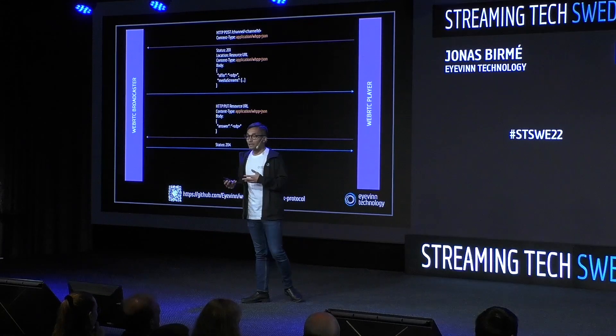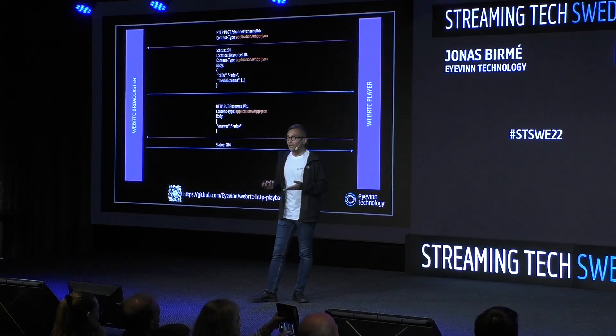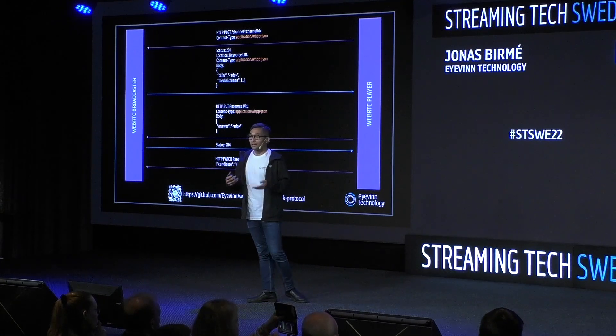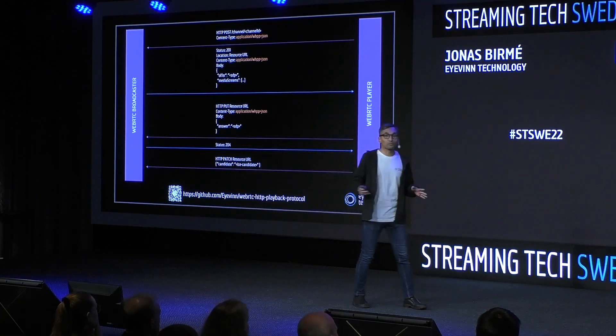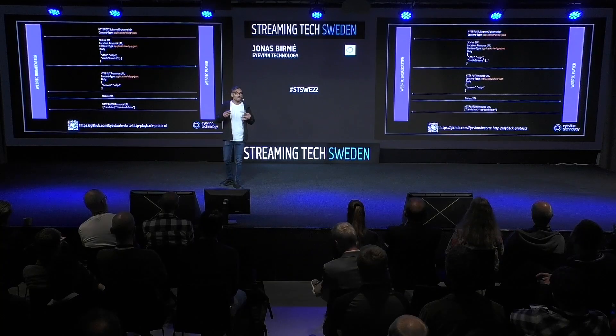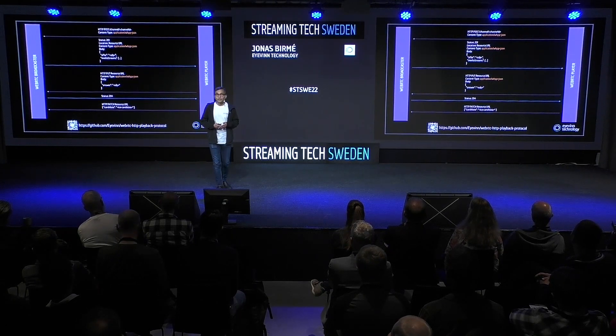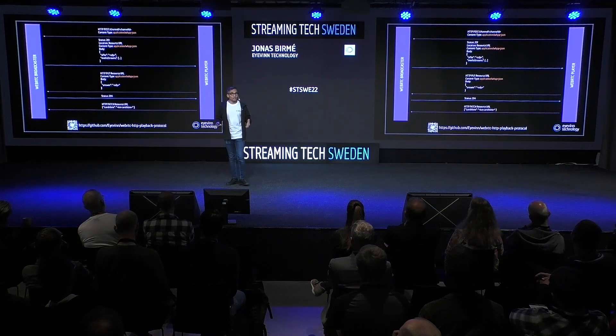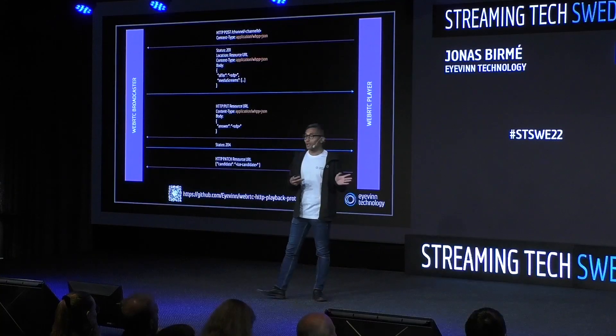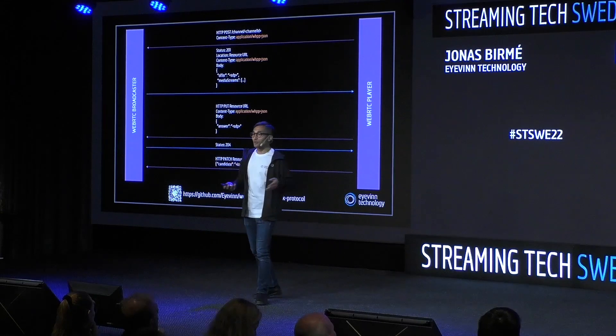The player then sends the SDP answer to that resource URI using HTTP PUT. The broadcaster response will be created, and now the WebRTC player has a resource URI for each viewer. It can then send all the ICE candidates using HTTP PATCH. This is very inspired by WHIP — why reinvent the wheel? We use the same approach, including trickle ICE via HTTP PATCH. We have the specification draft on our GitHub. It hasn't yet been accepted into any IETF forums — we presented it to DASH-IF and we'll see if they continue to move forward with it.